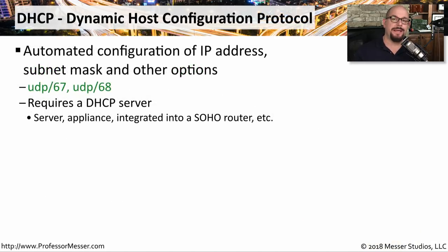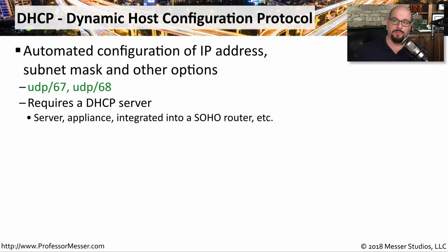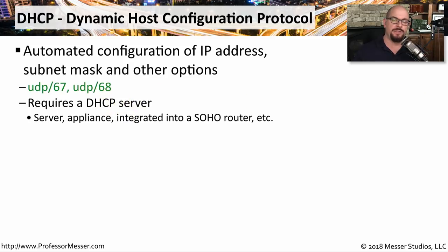When you start your computer, it's able to get an IP address automatically using DHCP, or the Dynamic Host Configuration Protocol. This is an automated process that assigns your IP address, your subnet mask, your DNS settings, and many other options within your IP configuration. It uses UDP port 67 and UDP port 68 to communicate, and you also need a DHCP server somewhere on your network. This might be a standalone server, or it might be a service that's integrated into the router that you use on your wireless network.